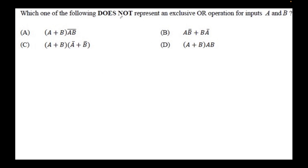We know the output expression for XOR is A·B-bar + A-bar·B. The question asks which option does NOT represent XOR. Option B says A·B-bar + A-bar·B, which is exactly the XOR expression, so option B cannot be the correct answer.